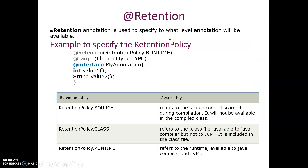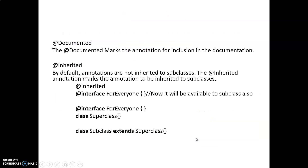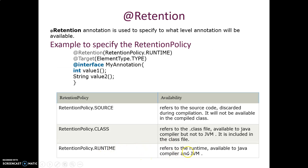Let us start with the first type called Retention. The @Retention annotation is used to specify to what level an annotation must be visible inside our program. The retention policy has three levels: SOURCE — refers to source code, discarded during compilation; CLASS — refers to the .class file, available to the Java compiler but not to the JVM; and RUNTIME — available to both the Java compiler and the JVM. Retention specifies to what extent that particular annotation must be retained inside the program.